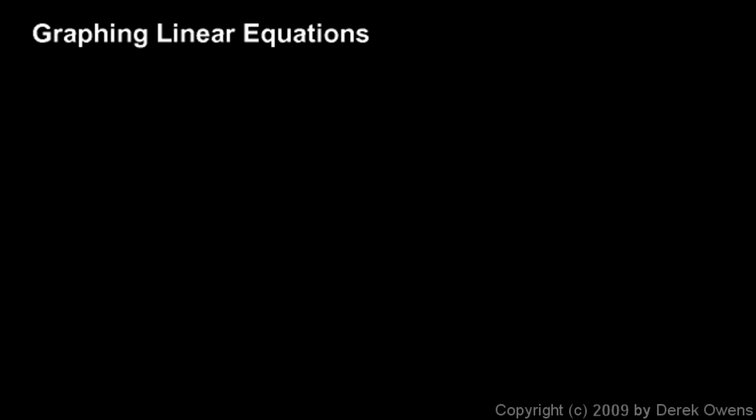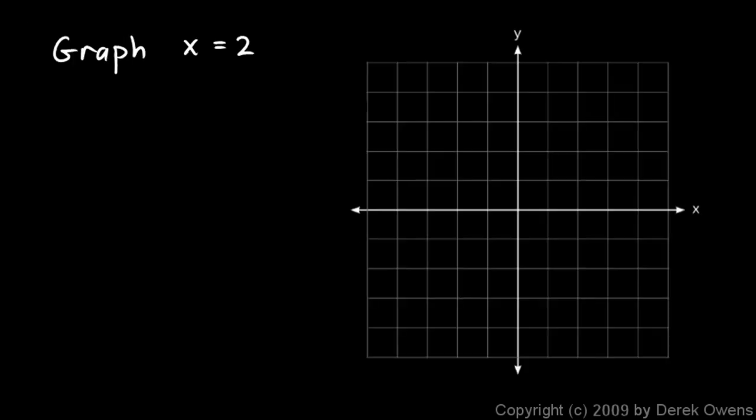We're still talking about graphing linear equations, and now we're going to talk about horizontal and vertical lines. In this example we're told to graph x equals 2. To do this, we find some xy pairs — some ordered pairs, some xy coordinates that are solutions to this equation — and we plot some points, then draw the line.